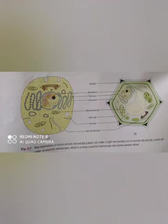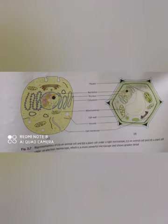The functions of vacuoles are: they maintain the shape of the cell, they maintain the balance of water in the cell, and they store chemicals, food, water and waste. Animal cells have very small vacuoles, but plant cells have larger vacuoles. Amoebas also have vacuoles to store food.